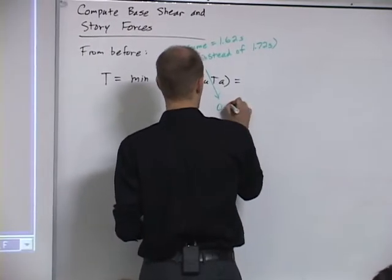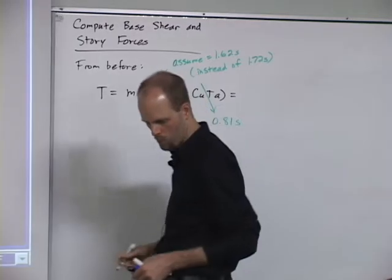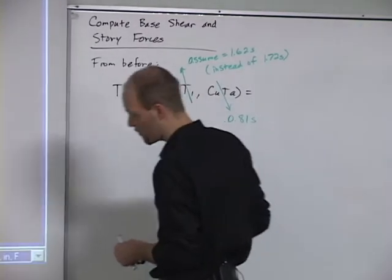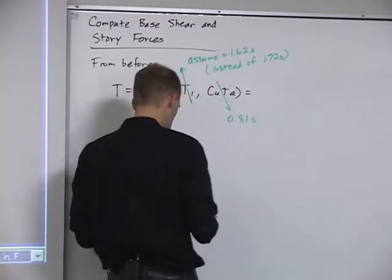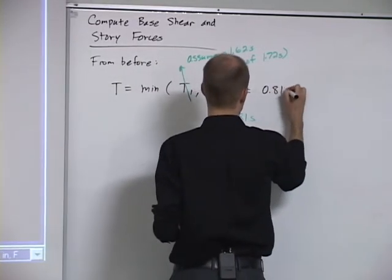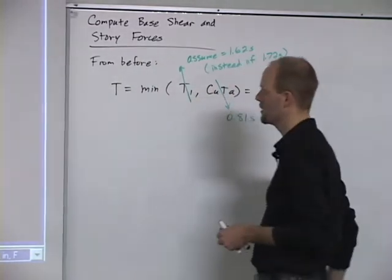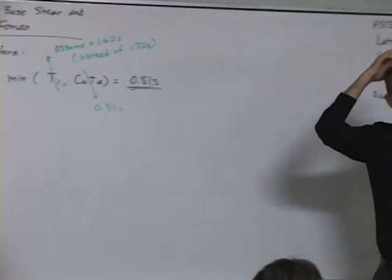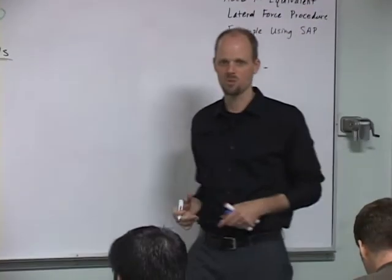So our CUTA from last time was 0.81 seconds. So if we take the minimum of those two, then the code requires us to use the 0.81 seconds in order to calculate our story forces and all those things, base shear, all that stuff.